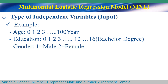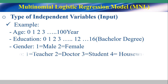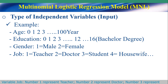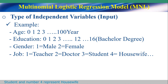Variable Gender: number 1 represents male and number 2 represents female. Variable Job: number 1 represents teacher, number 2 represents doctor, number 3 represents student, and number 4 represents housewife.